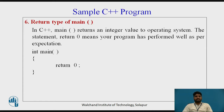Lastly, we will see what is the return type of main. In C++, main returns an integer value to the operating system. The statement 'return 0' means your program has performed well as per expectations.